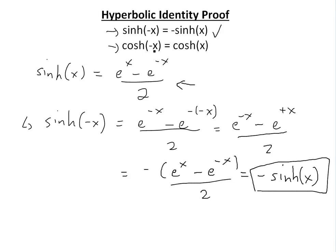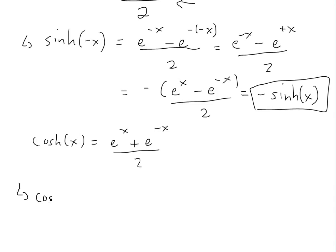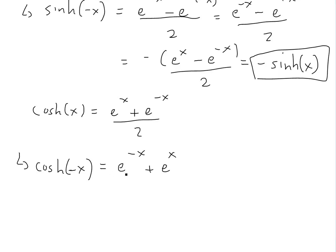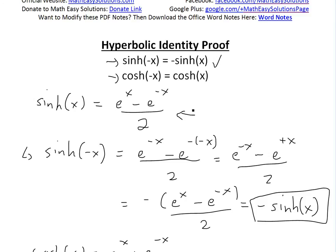Now the second identity: cosh of negative x. We know that cosh of x equals e to the x plus e to the negative x, divided by 2 — the same as sinh except with a plus sign. Plugging in negative x, we get e to the negative x plus e to the negative negative x, divided by 2, which is e to the negative x plus e to the x, divided by 2. Rearranging the terms gives us the exact same expression, so cosh of negative x equals cosh of x. There is our proof.